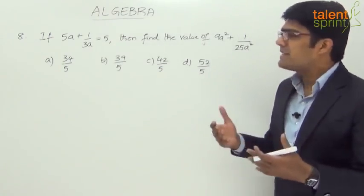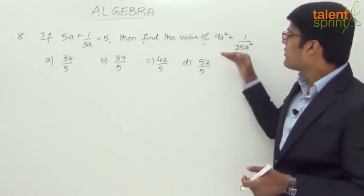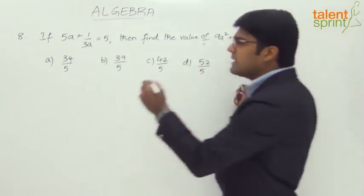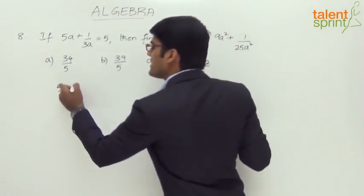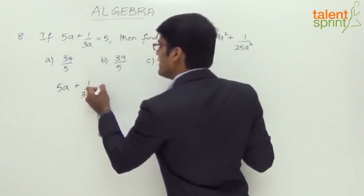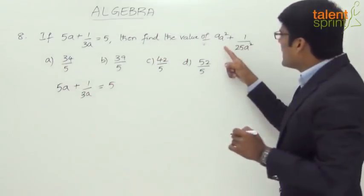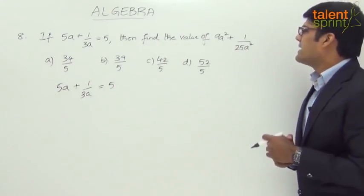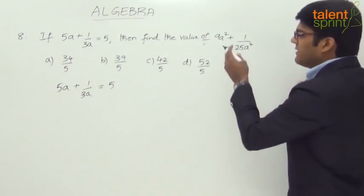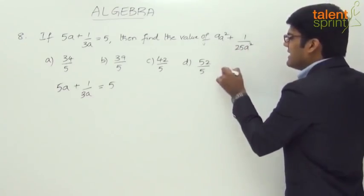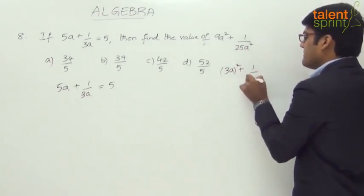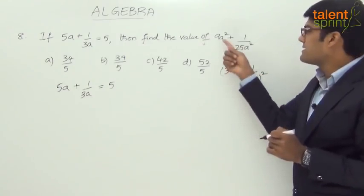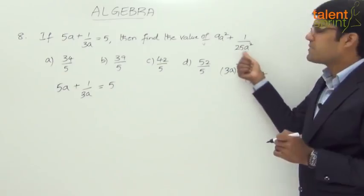Instead, let's see is there any other way to find out what the value here is of 9a square plus 1 by 25a square. Take the given equation 5a plus 1 by 3a equals to 5. If you really look at the required expression here, we have 9a square plus 1 by 25a square. Now this looks like 3a the whole square plus 1 by 5a the whole square.